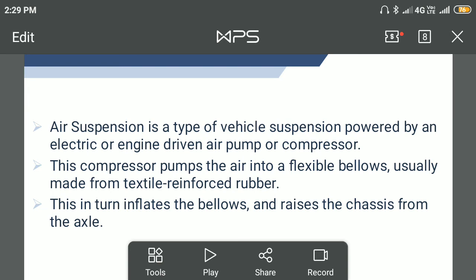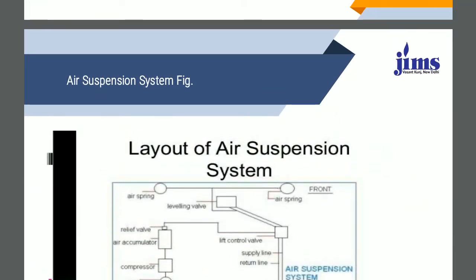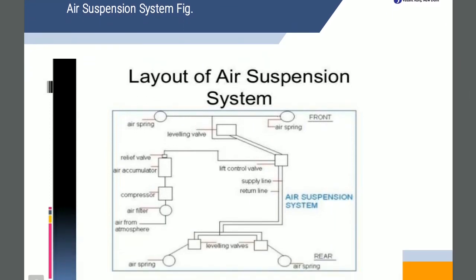Each air spring unit consists generally of a barrel or dome-shaped air chamber, into which a rubber diaphragm or bellows is positioned. The diaphragm is compressed by a specially shaped plunger, the end of which is attached to an axle. The air chamber is fastened to the frame of the car. Thus the plunger pushes against the diaphragm, attempting to collapse it into the air chamber. Each unit is filled with compressed air which supports the weight of the vehicle.